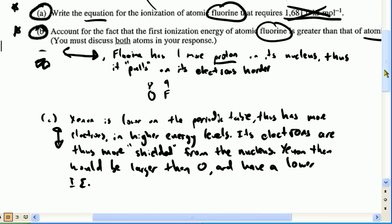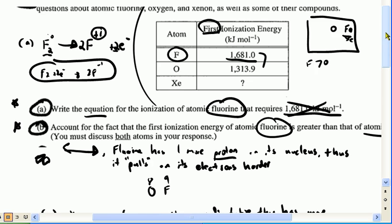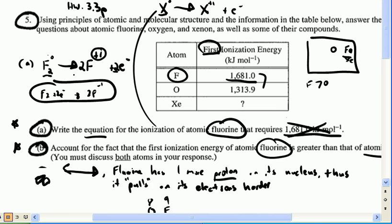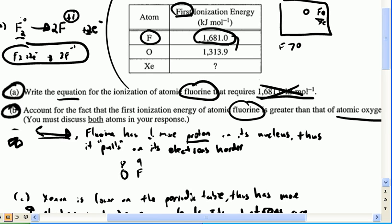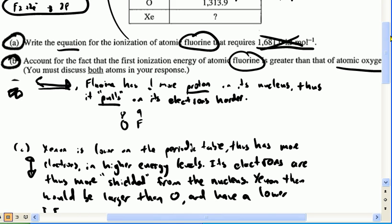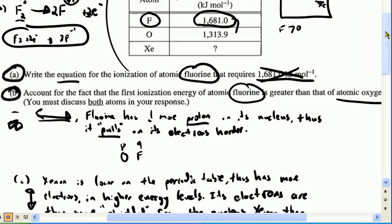Okay, so this explains why xenon would be larger than O and have a lower ionization energy. Let's go through these answers one more time. At the top it says write the equation for the ionization of atomic fluorine — we show atomic fluorine being ionized, losing an electron to become the plus one ion. That's not something fluorine likes to do, hence it has a very high ionization energy. The second question says account for the fact that the first ionization energy of atomic fluorine is greater than that of oxygen. So we know we're talking about a horizontal relationship — therefore we're referring to the protons. Fluorine has one more proton in its nucleus, thus it pulls on its electrons harder, must be smaller, thus have a higher ionization energy.